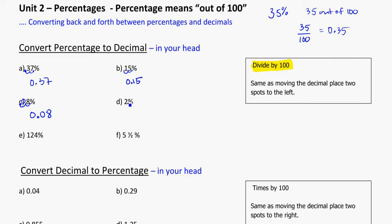Same thing for 2%. Imagine the decimal at the end and move it over two spots. Fill in any blanks with a zero. So that becomes 0.02.